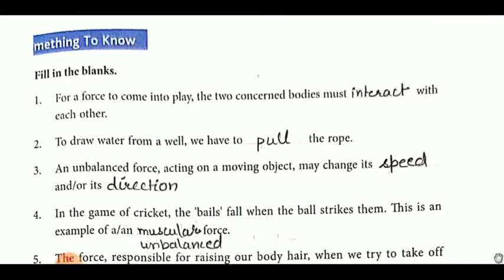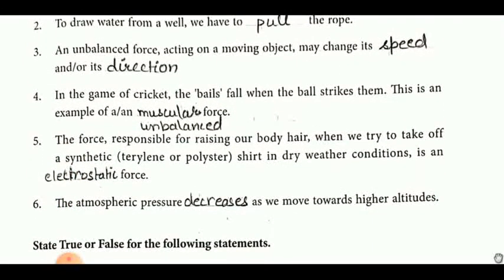Now, to draw water from a well, what do we need to draw water from a well? An unbalanced force acting on a moving object may change its speed and or its direction. Size, state, position. In the game of cricket, the bails fall when the ball strikes them. This is an example of which force? Muscular force or unbalanced force.